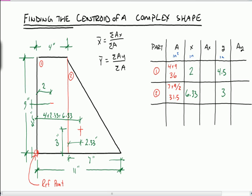Now, because in our equation here I need the sum of the product of Ax, I need to find the products Ax and then I'm going to sum them up. So, 36 times 2 is 72 and that will be inches cubed. And then 36 times 4.5 is 162 and that will also be inches cubed. 31.5 times 6.33 is 199.49 and 31.5 times 3 is 94.5. OK, so what I've done is I've found all my little Ax's. I've found all my little As and all my little Ay's.